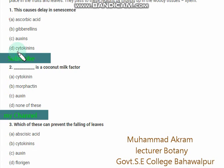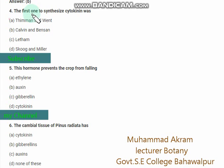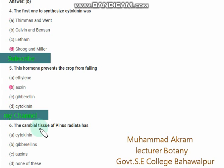Cytokinin is a coconut milk factor. Which of the following can prevent the falling of leaves? Cytokinin. The first one to synthesize cytokinin was Sukugent Miller — the right option is option D. This hormone prevents the crop from falling — the right option is option B — auxin.